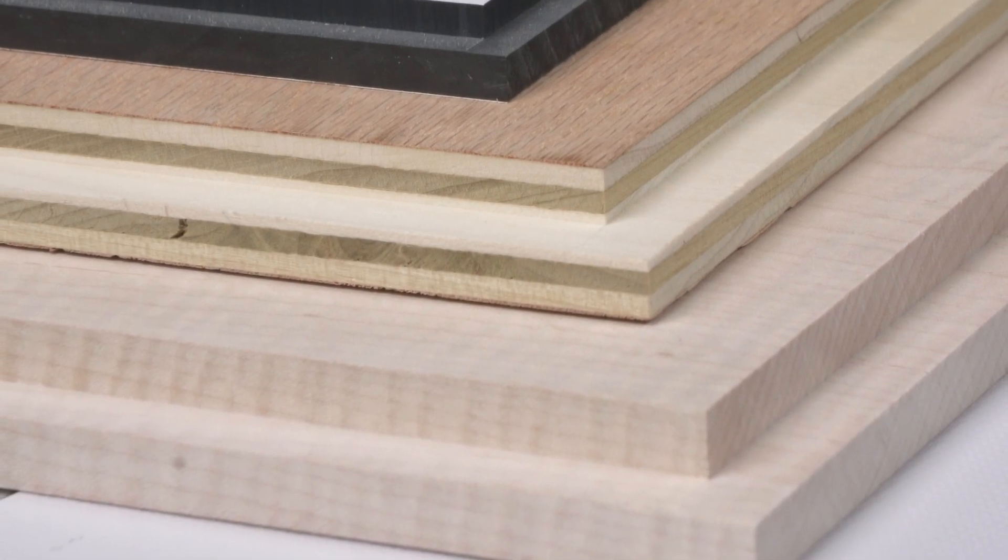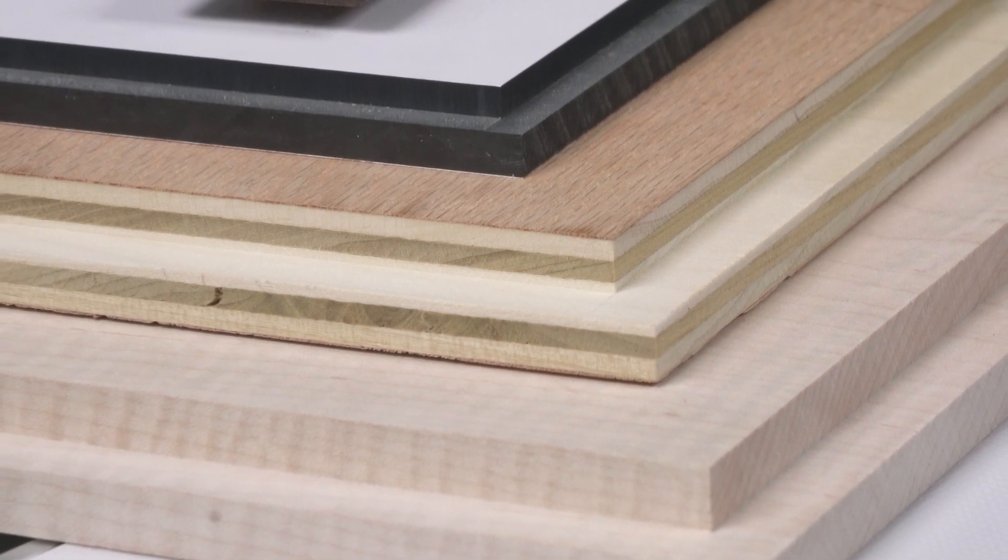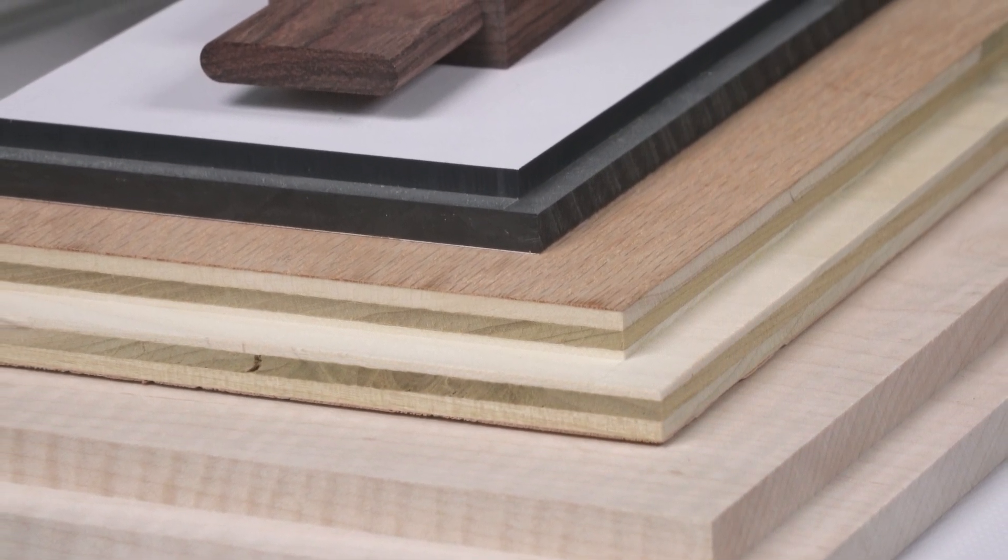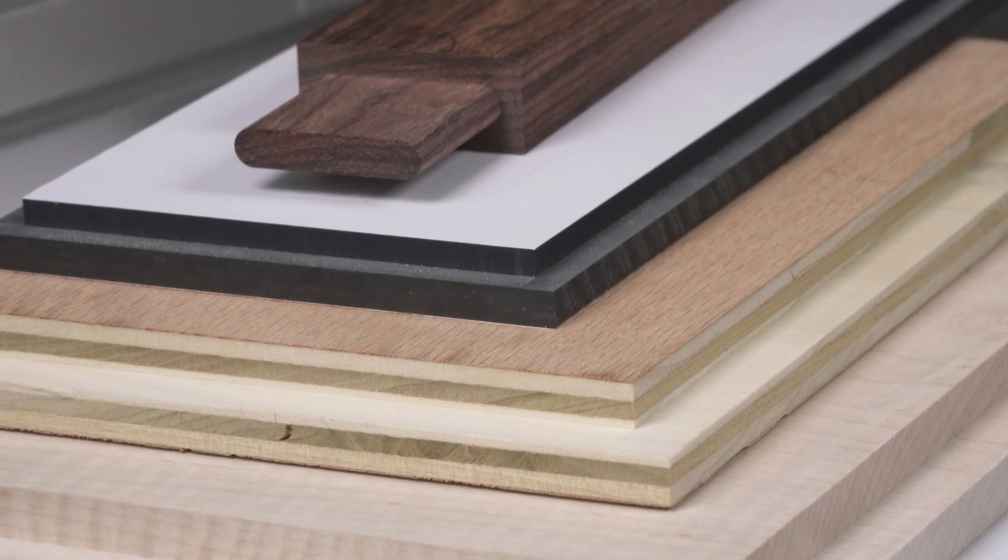Ultra-shear half-inch 3-flute solid carbide slow spiral bits. Flawless cuts in the densest materials. Order yours today.